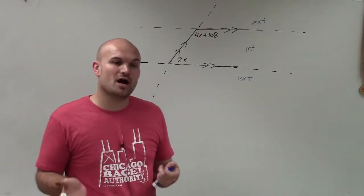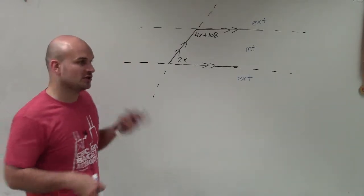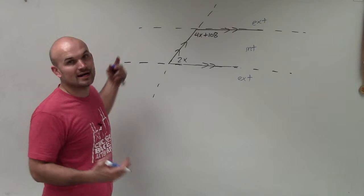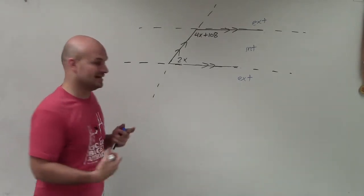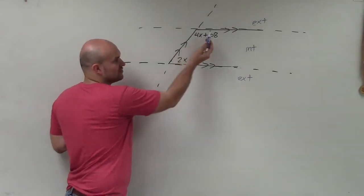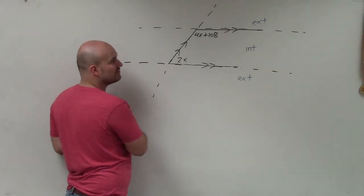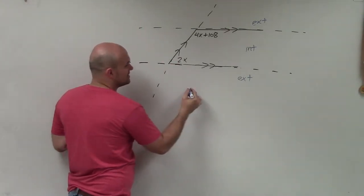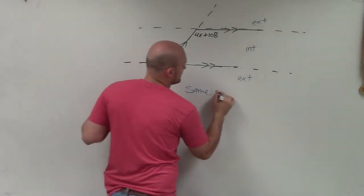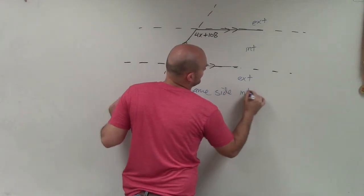And then the next thing is we look at, all right, what about the relationship on the transversal? Are they on the same side or on opposite sides or alternating? And you can see that they're both to the right of the transversal. So therefore, they are on same side interior.